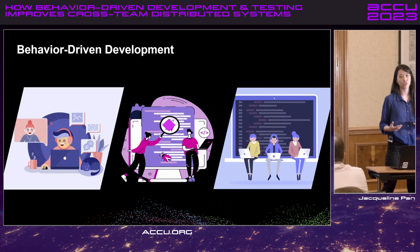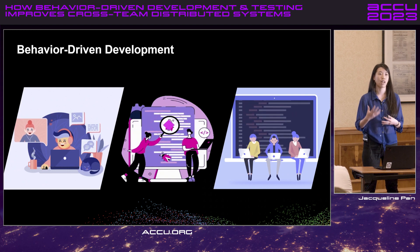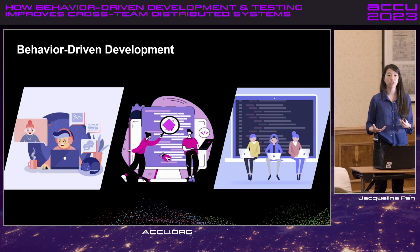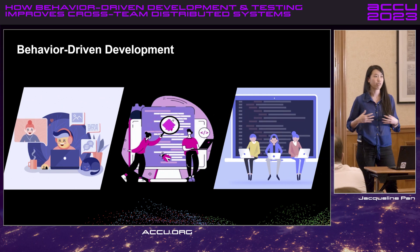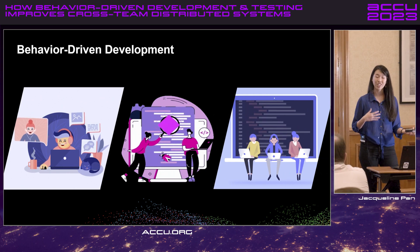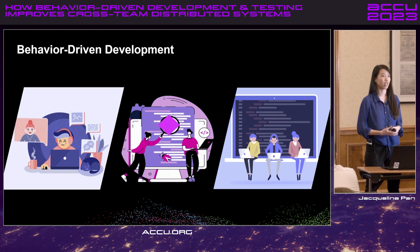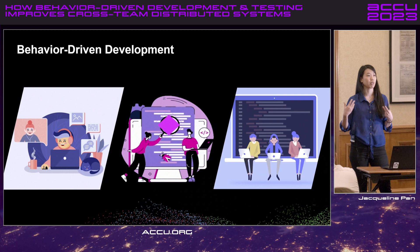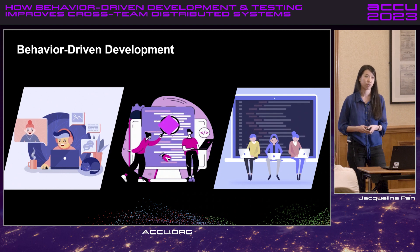BDD allows you to prevent this misunderstanding by aligning all of those requirements and expectations earlier in the process. It also gives you the shared language and the structure to allow everyone — technical or not — to have clear visibility and understanding of the project's progress, and also have living documentation of how the system works and the behaviors that we expect.